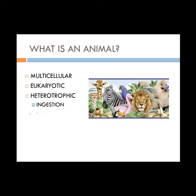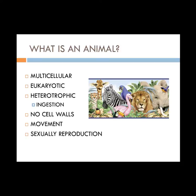Animal cells do not have cell walls, and most animals display some type of movement at some point in their life using nervous and/or muscular tissue. Most animals reproduce sexually, and animals have a dominant diploid stage with a reduced gametophyte stage.